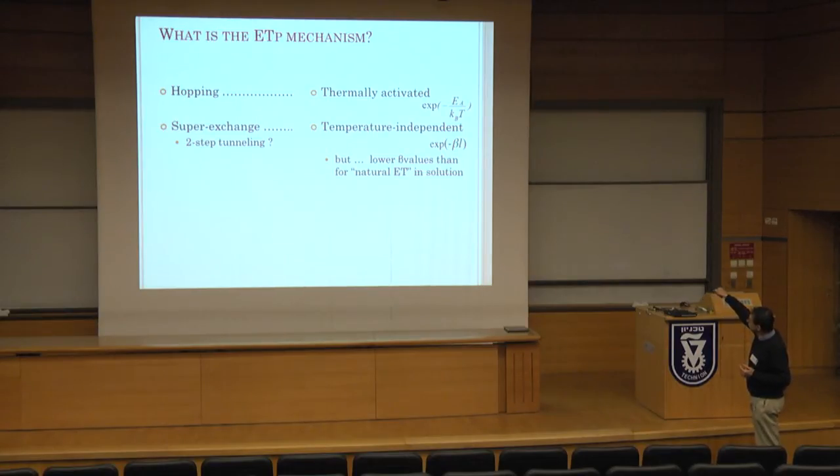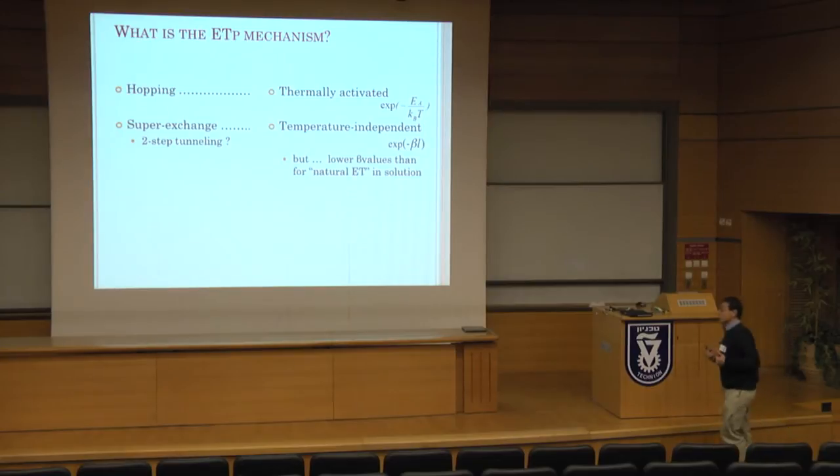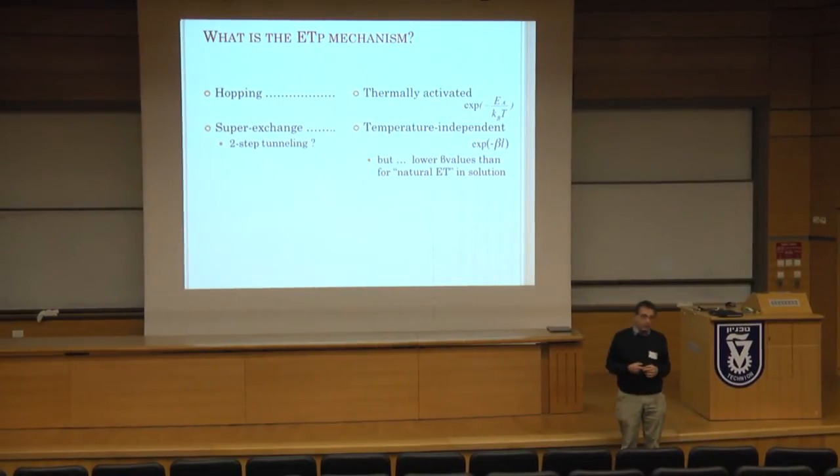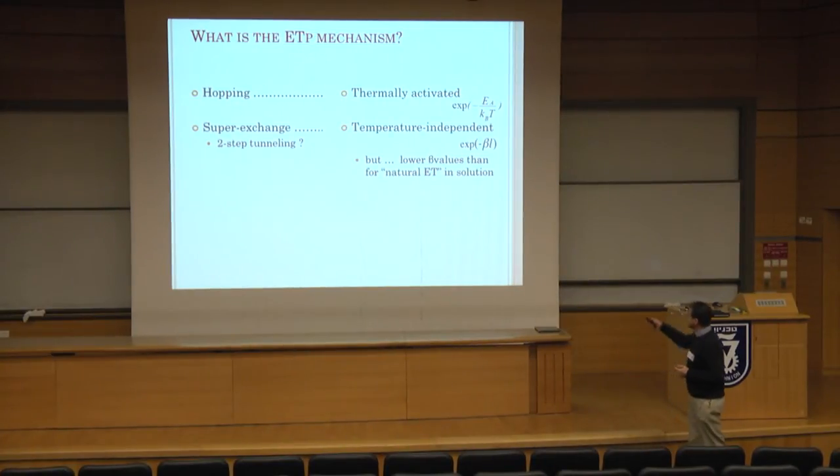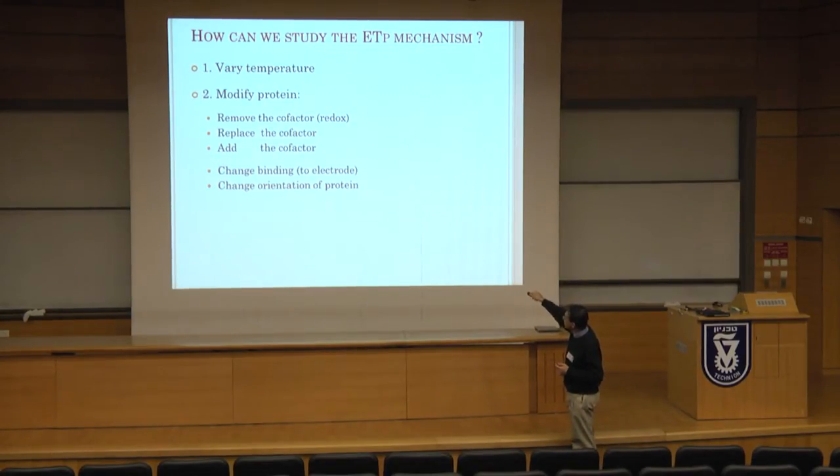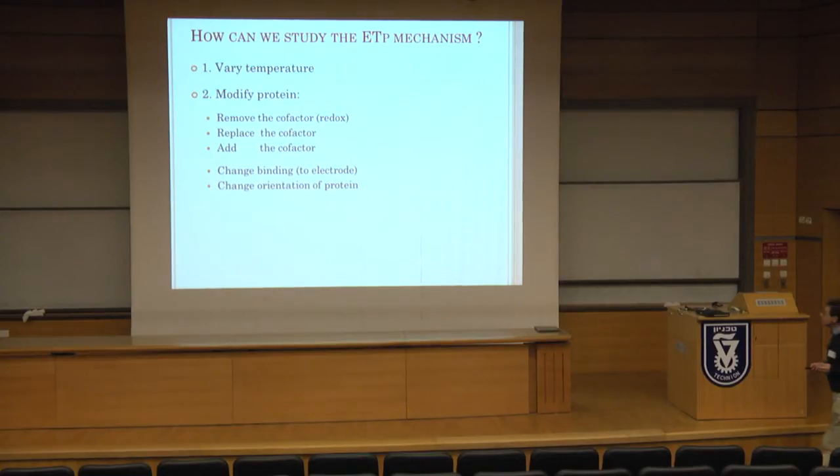However, the beta values, these decay, length decay parameters, that we find are much lower than the ones that are found for natural electron transfer in solution. The decay parameter in molecular electronics tells you something about how good the molecule can actually, how efficient the molecule is in electron transfer, and the lower the value, yes, the more conjugated generally the molecule, or the other way around. So, there is already a difference here, and we have to see why. So, to study it, I start to vary the temperature, and we modify the protein. This is what I meant by doping. We are going to remove the cofactor, which often is a redox factor, at least in the proteins that I will deal with in this lecture. We can replace that, we can add the cofactor. We can change the binding to the electrode, we can change the orientation of the protein. These are all experimental tools that we have, that we have available nowadays, because of the development of science and technology.